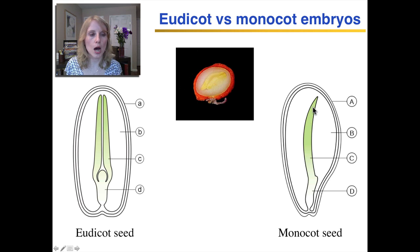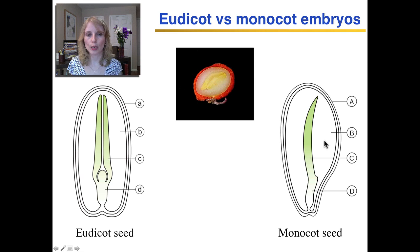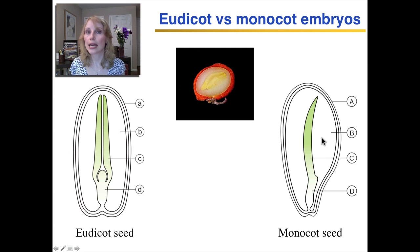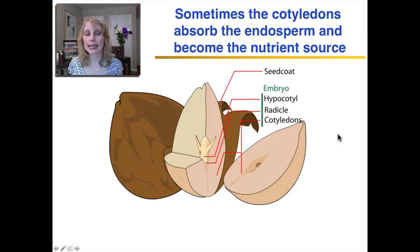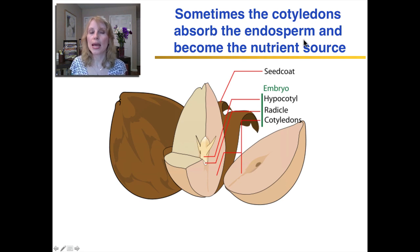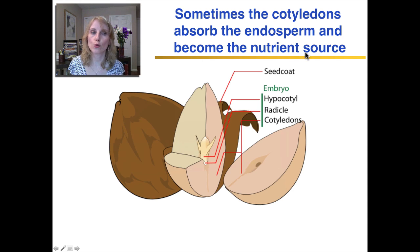Here's a monocot seed with one cotyledon, also surrounded by the endosperm. The endosperm provides nutrients for the growing embryo. In some seeds, the cotyledons absorb the endosperm and the cotyledons themselves become the nutrient source.